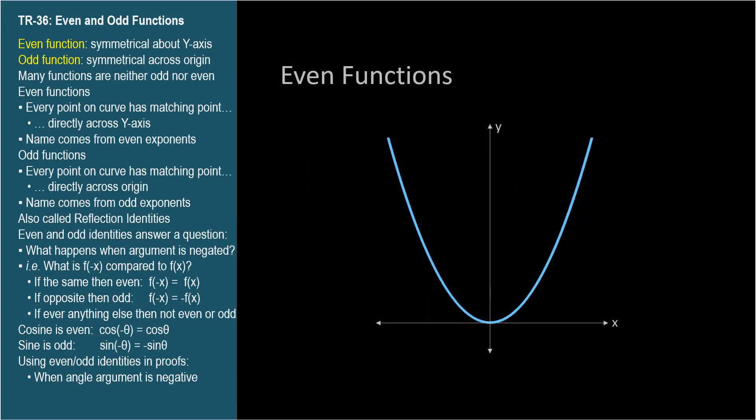An even function has this characteristic. Every point on its graphed curve has an associated point directly across the y-axis. An even function's graph is symmetrical about the y-axis, a mirror image.